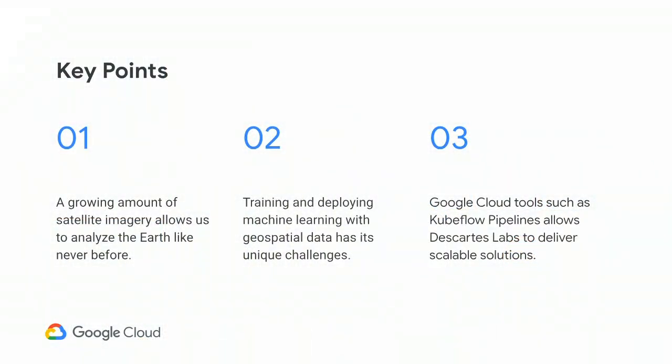We're going to run through a lot of things during this talk. The three key points we hope you can walk away remembering are: first, in our domain — satellite imagery — there's an incredibly large and growing amount of data that provides a powerful way of understanding the world around us. Second, machine learning is a powerful technique for processing and understanding satellite imagery, but it presents unique challenges in this domain. Third, we are using an array of tools within the Google Cloud Suite, and in particular we've been exploring Kubeflow Pipelines.